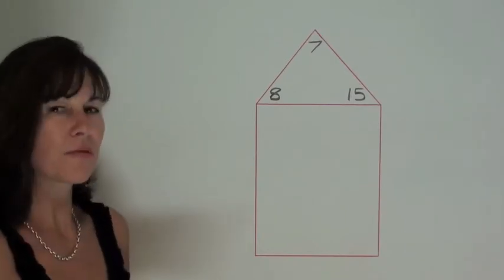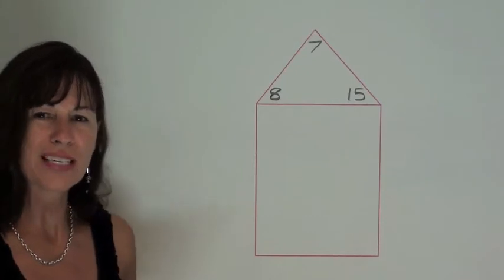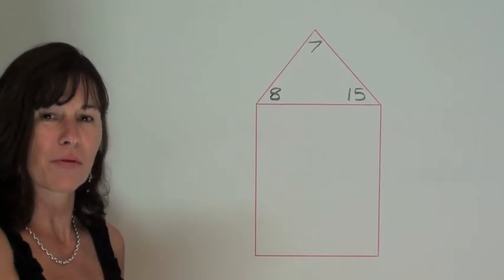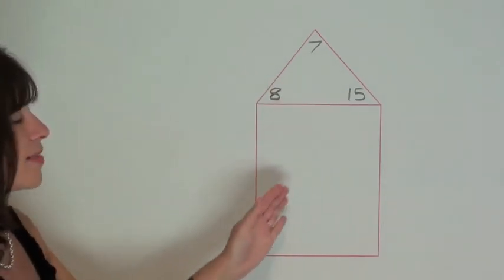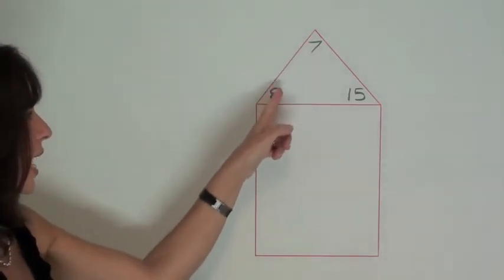Now, when we're looking at fact families, this method can be used and it's quite effective to show children and demonstrate to them how numbers are actually part of a family. So we can see in this house here that we have three numbers that we're looking at, 7, 8 and 15. They're all part of a family and they all live in the same house.